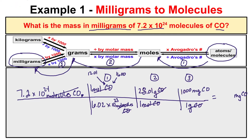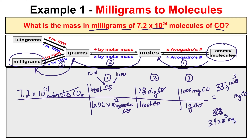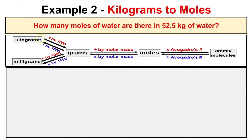We end up with 335,003 milligrams of carbon monoxide. Putting this in scientific notation with the correct number of significant figures gives us 3.4 times 10 to the 5th milligrams of carbon monoxide as our final answer. So if we have this many molecules of carbon monoxide, they're going to have a mass of 3.4 times 10 to the 5th milligrams. Let's take a look at another problem.